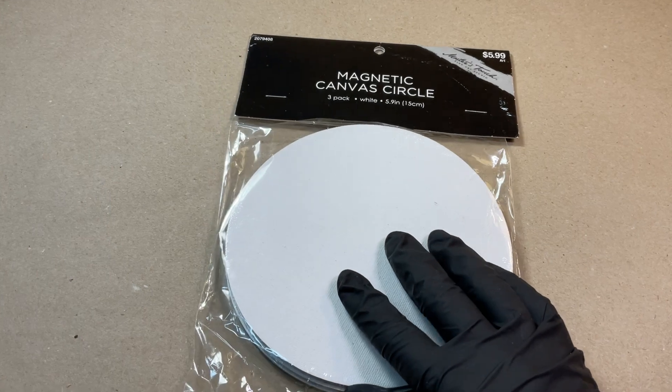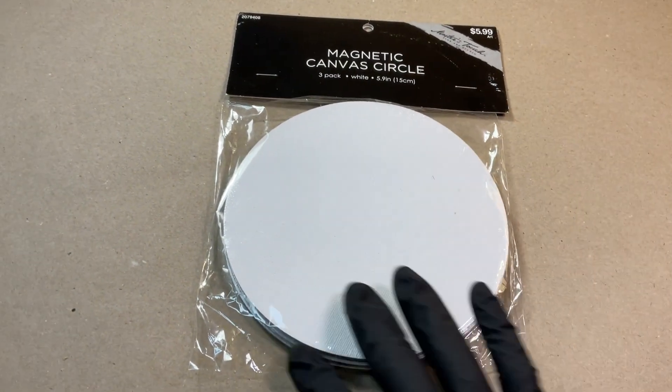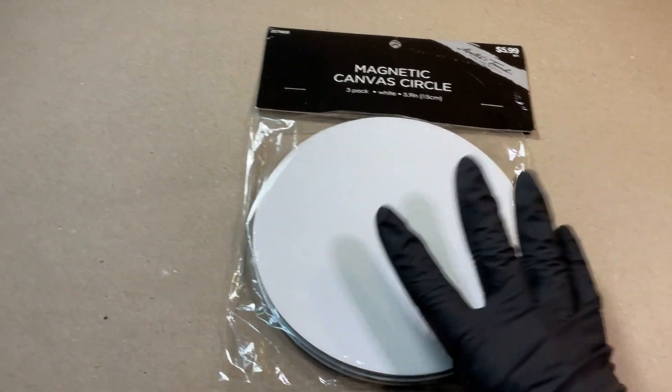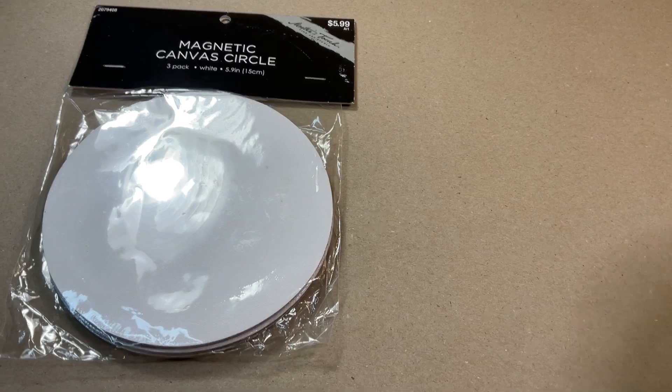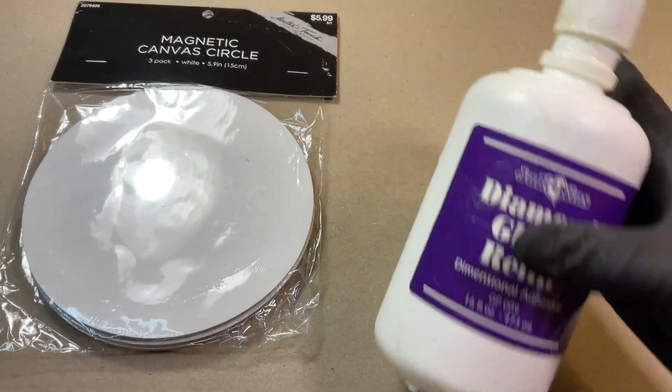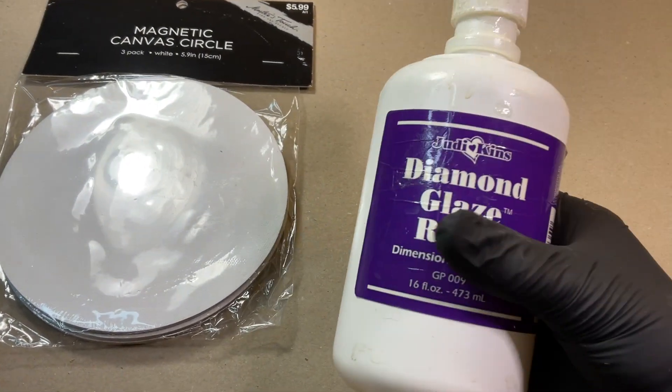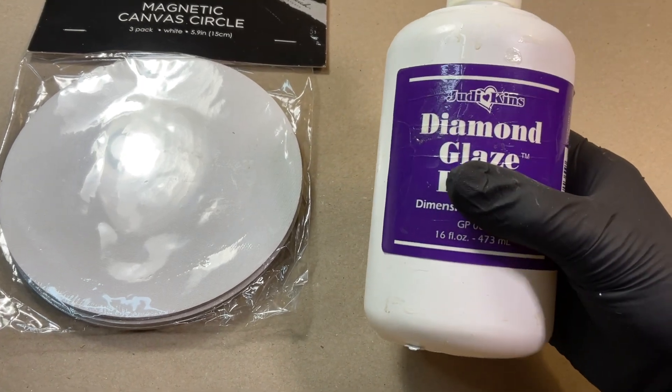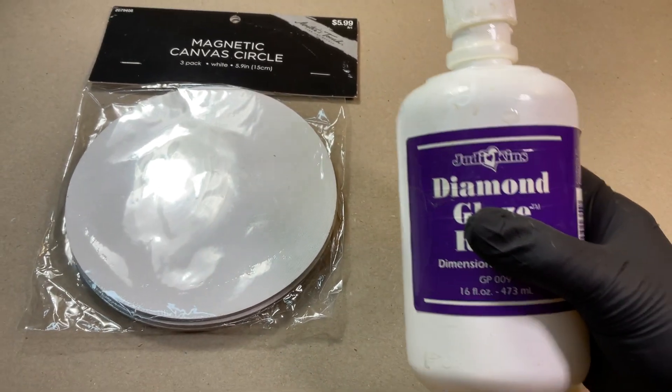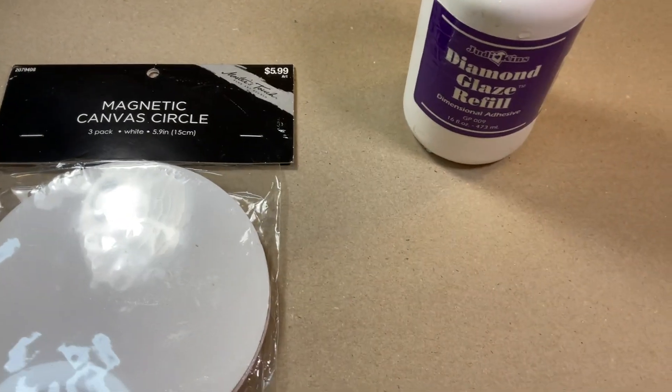Today we're going to be using these magnetic canvas circles that I picked up at my local hobby store. They're pretty inexpensive. They're canvas with magnets on the back and we're going to be using diamond glaze. This is Judican's diamond glaze. You may have seen me use it many times on my channel because we are going to be working with skins.